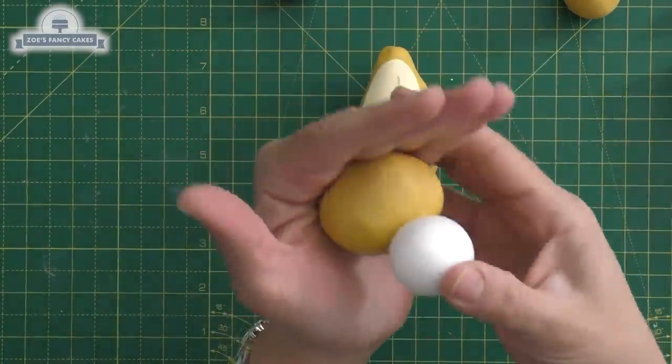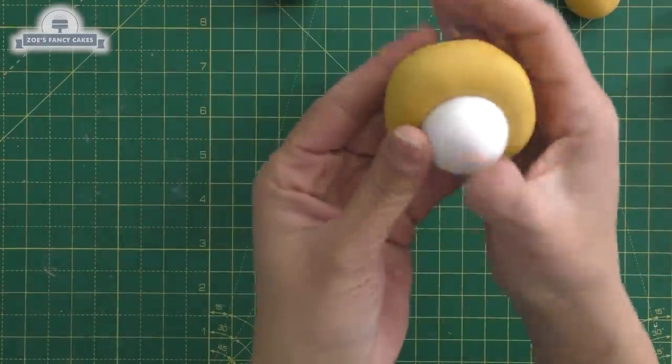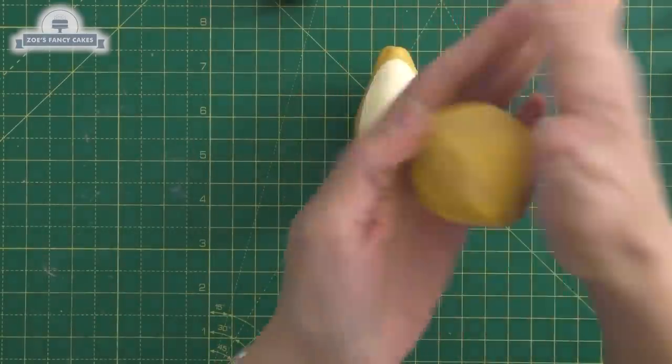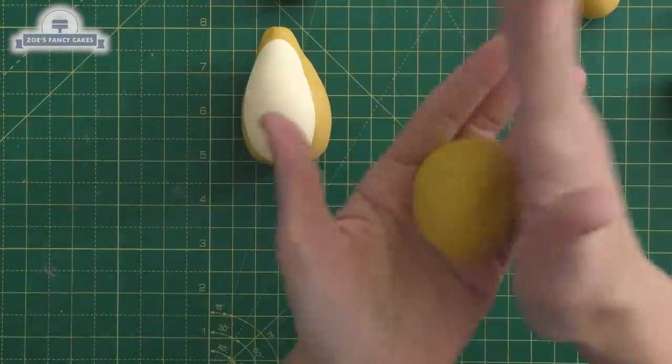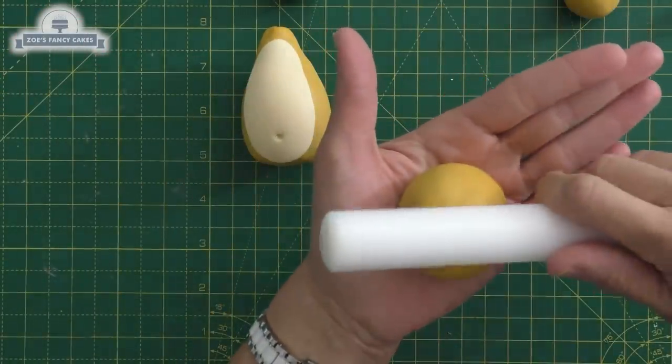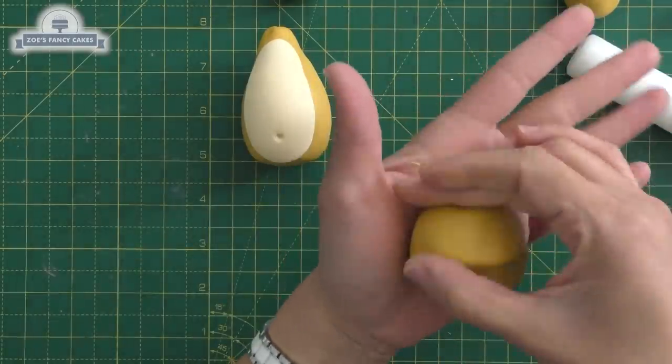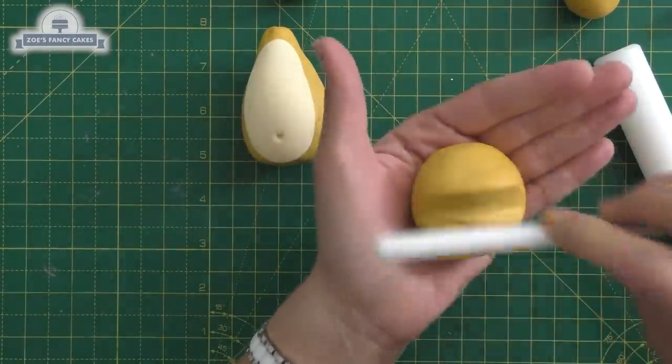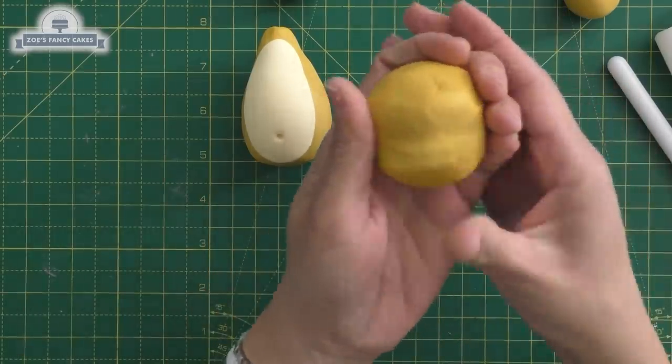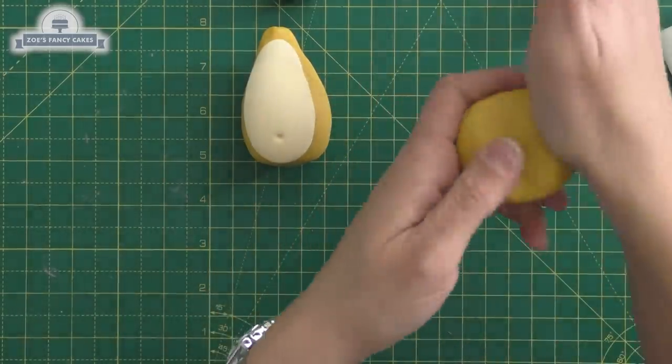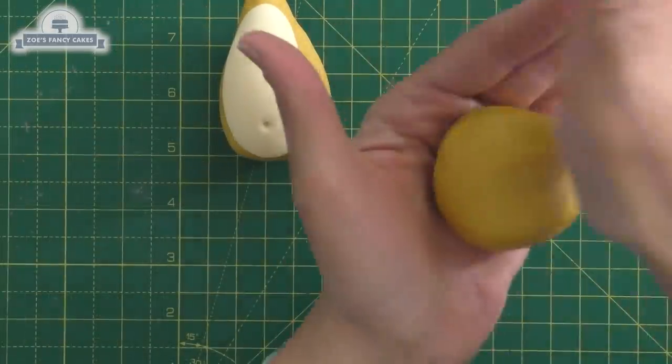Now for the head. We're just wrapping some more of that yellowy color paste around a polystyrene ball. Don't forget if you're using icing or modeling paste that's edible, you won't need that polystyrene. This one's not an edible paste so no one's going to be eating this one. So she's just put an indentation across where the eyes are going to go. She's just used a little cell pin to do that with.